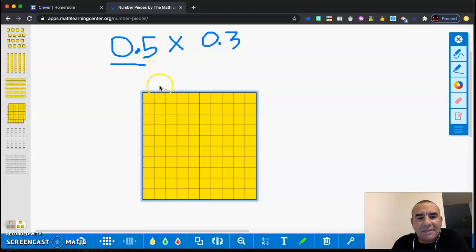So I have 5 tenths. What I'm going to do is I'm going to highlight 5 tenths. Let me use the color green. 5 tenths. So let's do one, two, three, four, five. So I'm going to color them all.